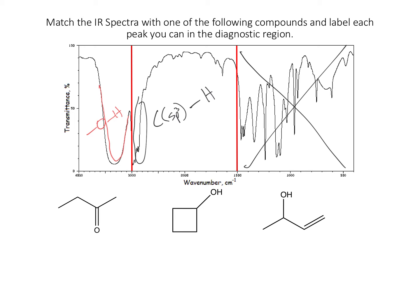So if these are the three possible molecules, I think we can eliminate this one because there are no alcohols. Both of these molecules have alcohols, but for this molecule I would expect to see a carbon-carbon double bond in the double bond region, which I don't. So that means that this is most likely the molecule giving rise to this IR spectrum.